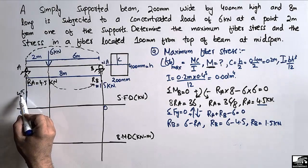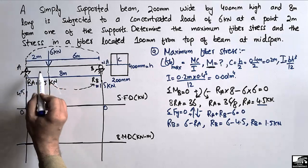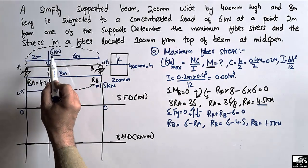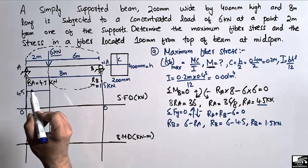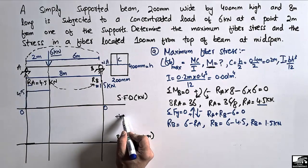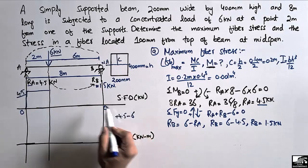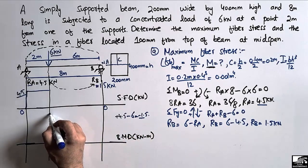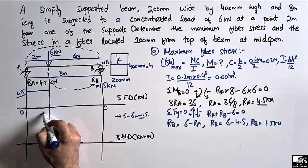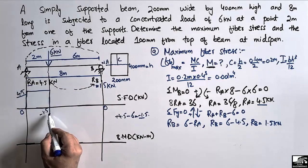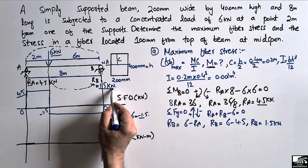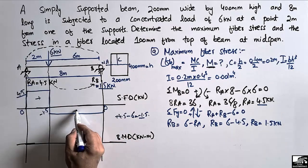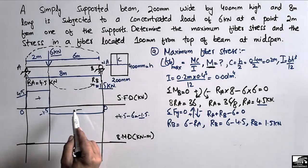There is no load on the beam between A and the load point, so it is a straight line at 4.5. Then the 6 kilonewton load acts downward: 4.5 minus 6 gives minus 1.5, which lies below the reference line. There is no load after that, so a straight line at minus 1.5 until the reaction of 1.5 kilonewton at B closes the shear diagram. This gives a positive shear box and a negative shear box.